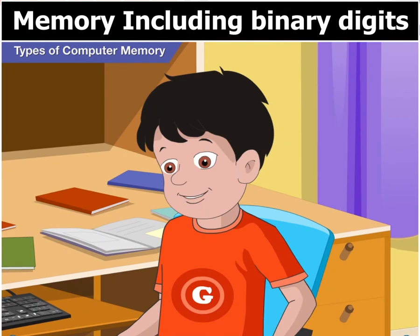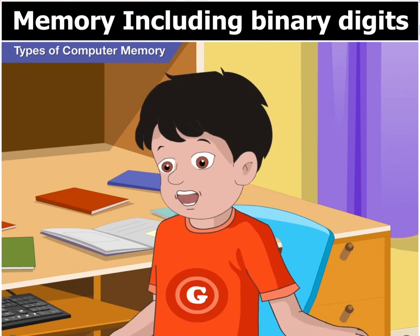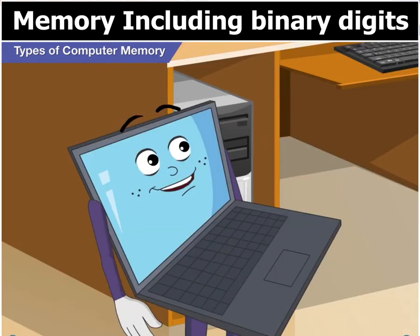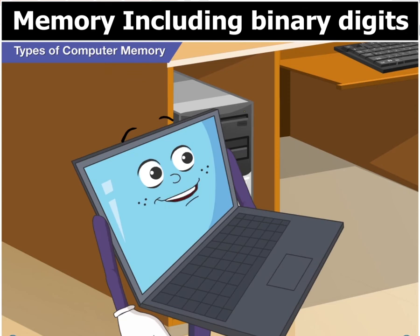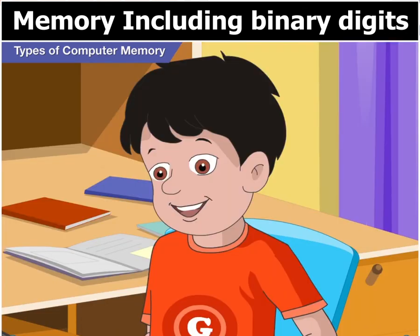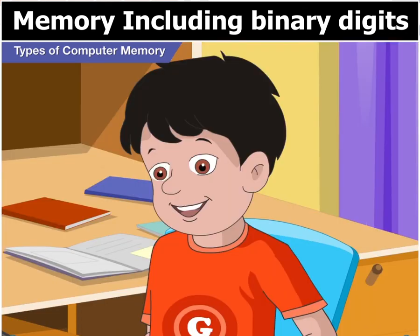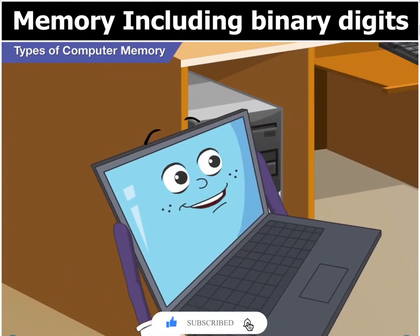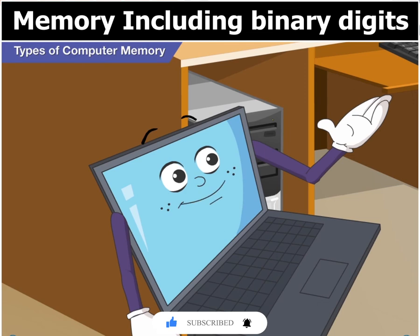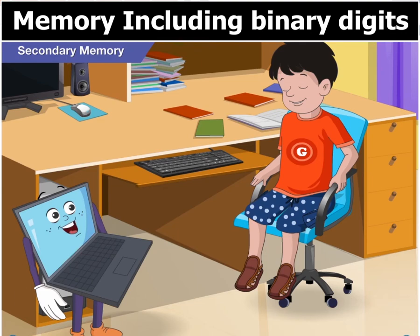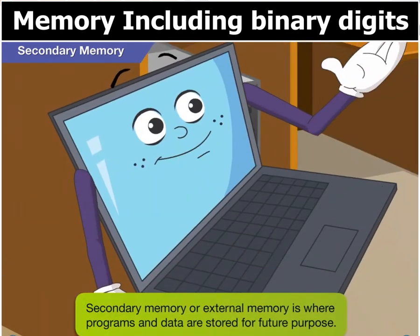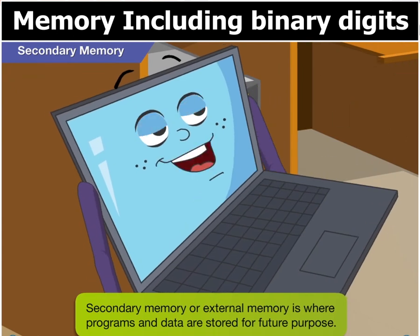Now I get it, Toggle. So is this where all our files and folders are saved when we give the save command? Good question, Goggle, but the answer is no. So where do the files and folders go? They are stored in what is called a hard disk. A hard disk is a type of secondary memory. Secondary memory or external memory is the name given to devices where programs and data can be stored for future purpose.